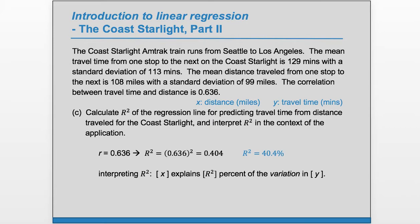If r-squared is 1, it perfectly explains it, meaning if you know x, you'll be able to know y. So here we have: x, the distance between stops, explains 40.4% of the variation in travel time between stops.